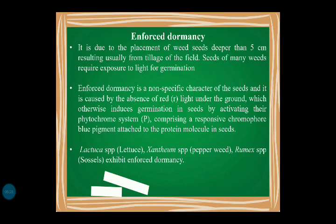Enforced dormancy is a non-specific character of seeds and is caused by the absence of red light underground. This absence of red light prevents germination, whereas red light would otherwise induce germination by activating the phytochrome system P — which comprises a responsive chromophore, a blue pigment attached to a protein molecule in the seed. Seeds showing enforced dormancy include Lettuce species, Xanthium species, and Rumex species.